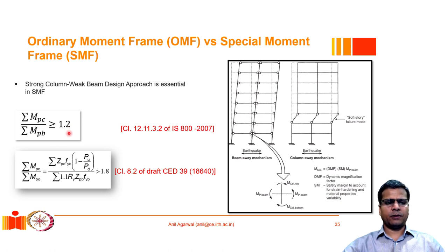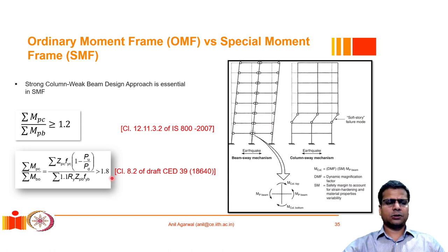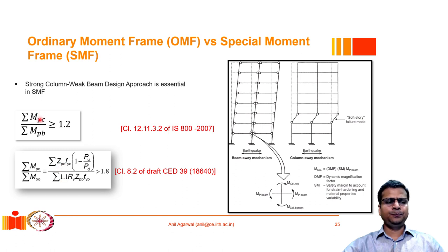IS 800 provides a provision requiring the ratio of the column moment capacity to the beam moment capacity at a joint to be ≥1.2, consistent with other international standards. The new draft ductile detailing code is more stringent: it requires ΣMpc / ΣMpb ≥ 1.8, meaning the column capacity at a joint should be at least 80% greater than the beam capacity. This draft code also provides more detailed guidance on how to calculate ΣMpc and ΣMpb, including a factor of 1.1 for reserved strength and a factor Ry for the ratio of expected to characteristic material strength.